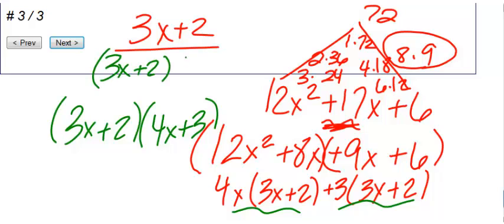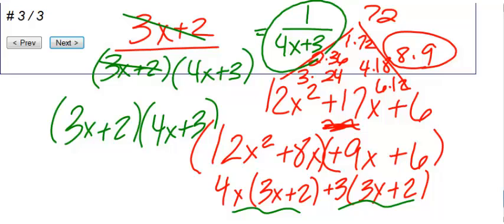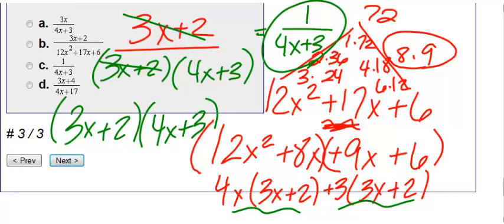3x plus 2 over 4x plus 3. So now I look at the top and the bottom. They both have 3x plus 2, so I'm going to cross those off. Therefore, my final answer, if I cross everything off at the top, I'm left with 1. On the bottom, the only thing I'm left with is 4x plus 3. So we get the answer of 1 over 4x plus 3, which is choice C.